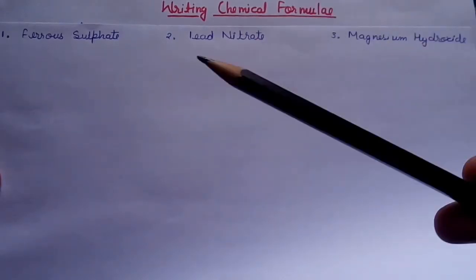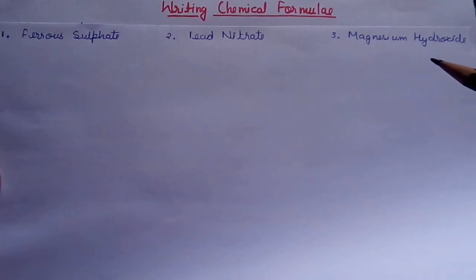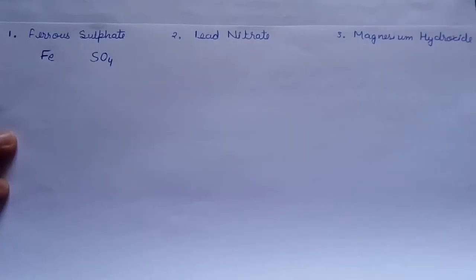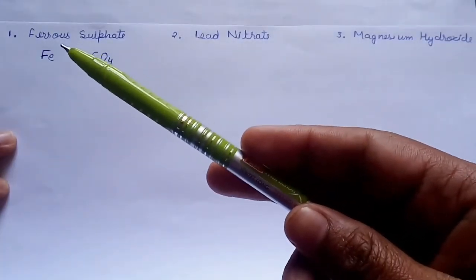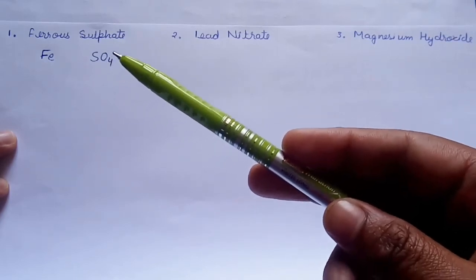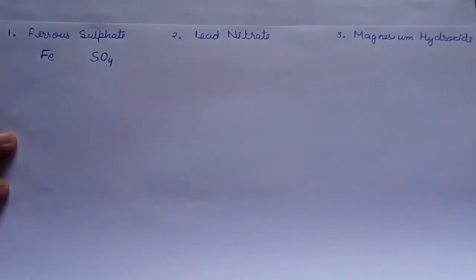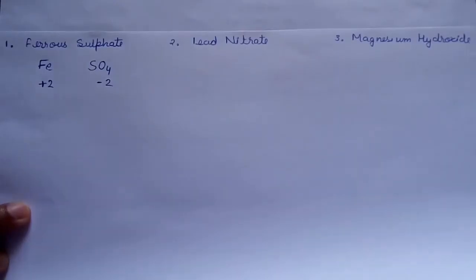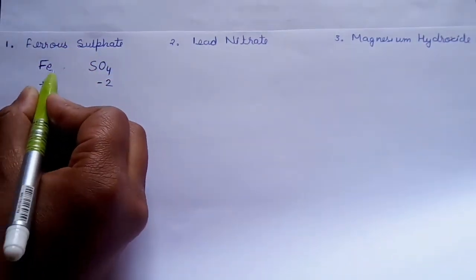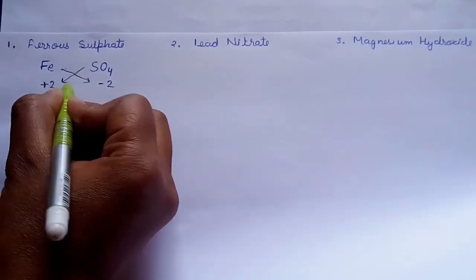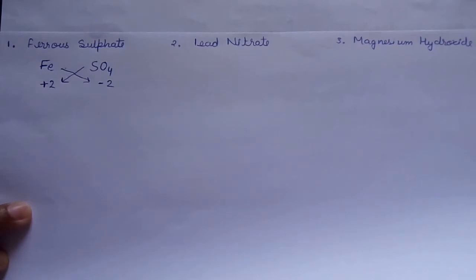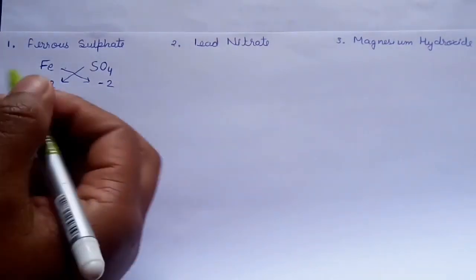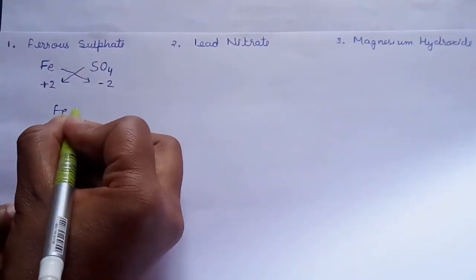Look, I have given you 3 compounds. First is ferrous sulfate, lead nitrate and magnesium hydroxide. The first step for writing chemical formulas is write the symbols of the ions. Look, I have written the symbol of iron as Fe and sulfate as SO4. Now, I will write the valency of these ions just below them. As I have written the valency of these two ions, now you will put an arrow here. You have to make the ratio as simple whole number ratio and 2 and 2 ratio makes 1. So you will write the formula as FeSO4. Got it?